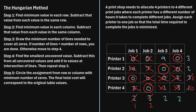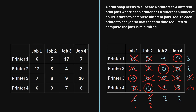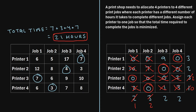To find the final total cost, we refer to our original matrix. The circled assignments correspond to the cells for printer one to job four, printer two to job three, printer three to job one, and printer four to job two. The total time is 7 plus 3 plus 4 plus 7, which equals 21 hours. This is how we assign each printer to only one job and minimize the total completion time.